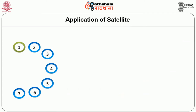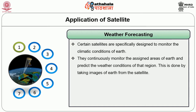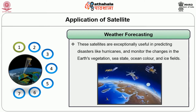Applications of satellites. The first application is weather forecasting. Certain satellites are specifically designed to monitor the climatic conditions of earth. They continuously monitor the assigned areas of earth and predict the weather condition of that region. This is done by taking images of the earth from the satellites. These images are transferred using assigned radio frequency to the earth station. These satellites are exceptionally useful in predicting disasters like hurricanes and monitoring the change in the earth's vegetation, sea state, ocean color, and ice fields.